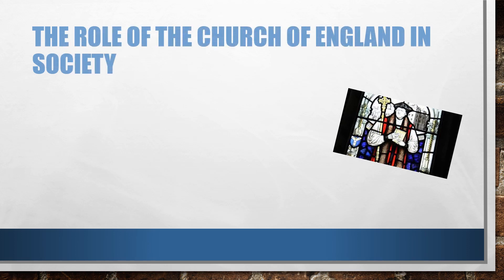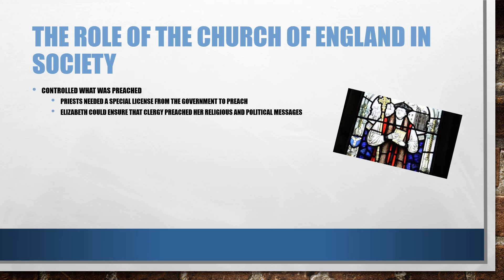It's important to consider the role of the Church of England in society. It was one of the key pillars of society and in terms of its role it was able to control what was preached to the masses. Those that worked in the clergy, certainly with regards to priests, required a special license from the government to preach in their particular area. Elizabeth could ensure that clergy preached the correct religious and political messages through the Act of Uniformity.